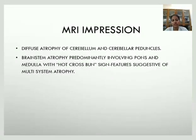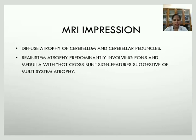The impression is diffuse atrophy of the cerebellum and cerebellar peduncles, brainstem atrophy predominantly involving the pons and medulla, with the hot cross bun sign — features suggestive of multisystem atrophy.